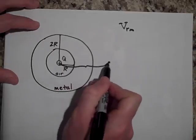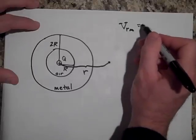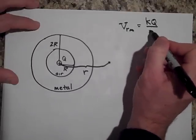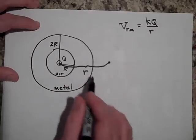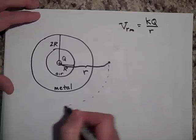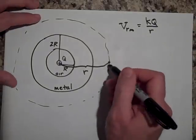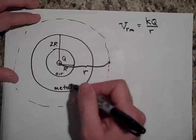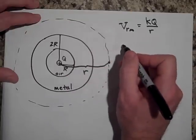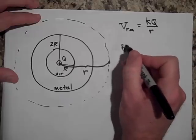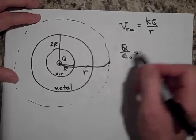Okay, so here we are out here at R, and the potential is going to be equal to KQ over R. Because when you're outside here, this is going to behave just like a point charge. In fact, if I drew a Gaussian surface, the charge enclosed is just Q because this is not charged at all. It has no net charge. So the charge enclosed is going to be just Q over epsilon naught.